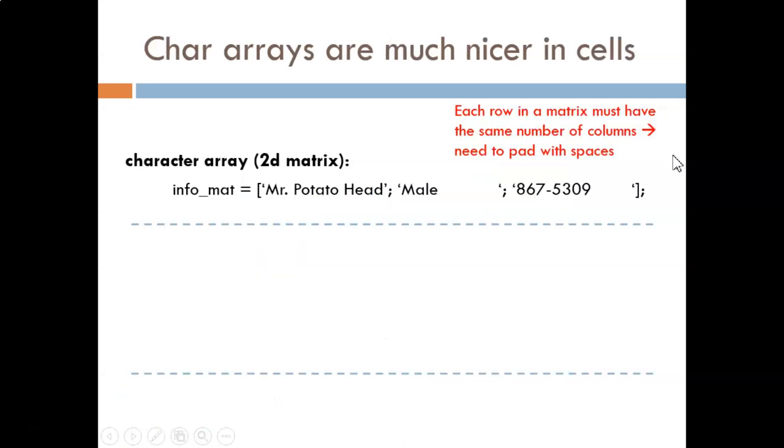Cell arrays have many applications. Here we'll discuss just one of the most useful: storing multiple lines of character data. Let's say we are storing data for a person named Mr. Potato Head who is a male and has this phone number. If I were to use a character array, then each row of data would need to have the same number of columns. Because of this, I'm forced to fill in the correct number of spaces after each of the shorter entries. This is tedious and difficult.